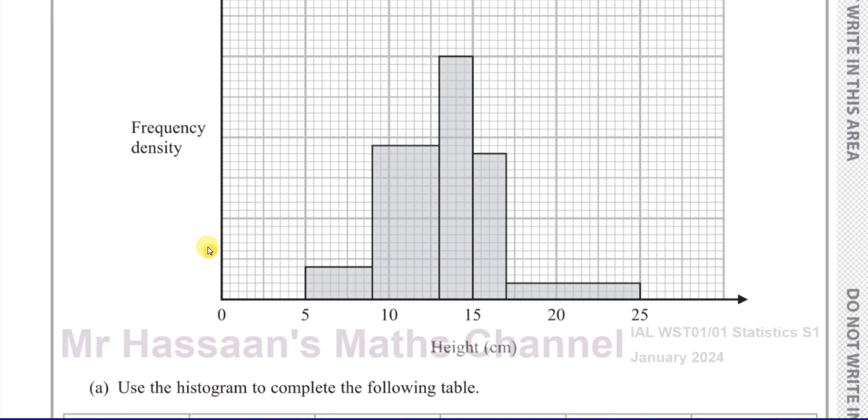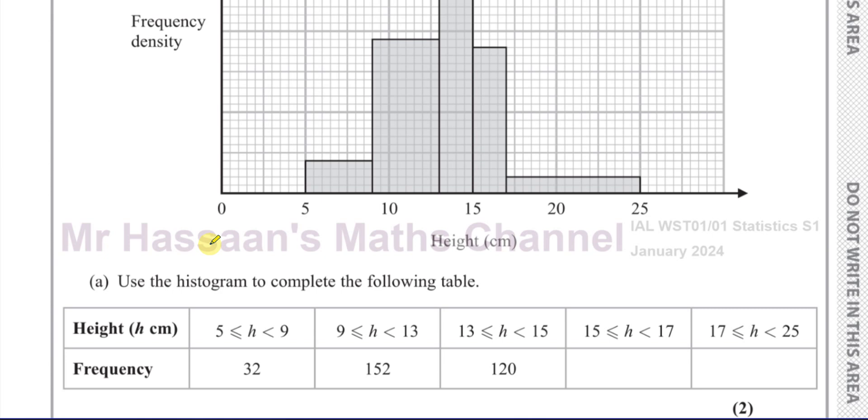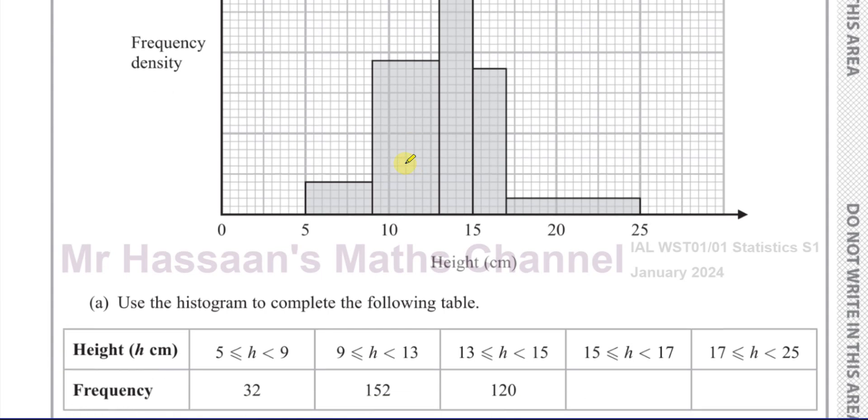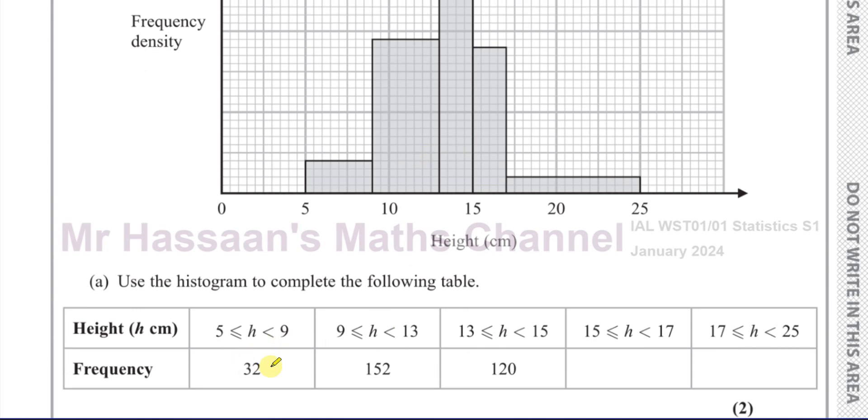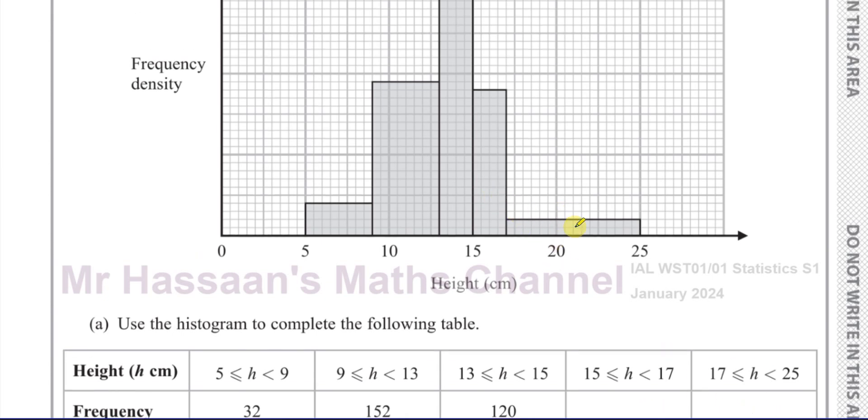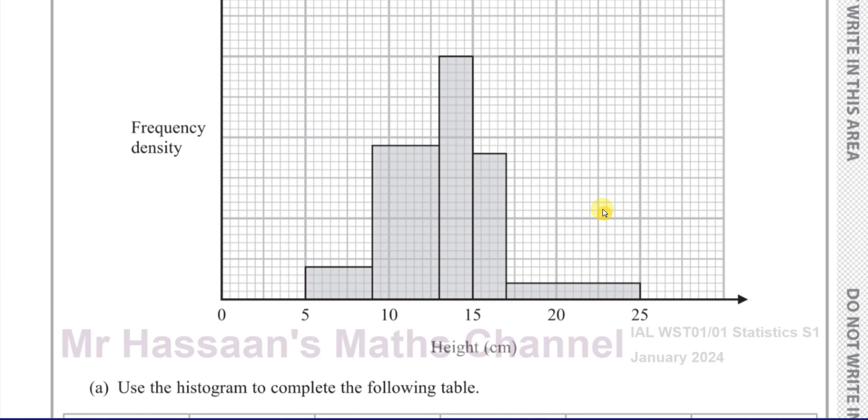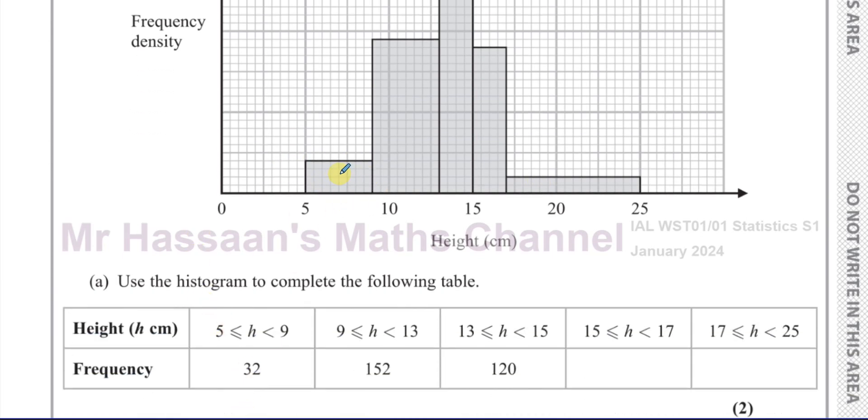So it says use the histogram to complete the following table. We're given a frequency table and a histogram. From the histogram, the first bar, second bar, and third bar values of the frequency table are given, but the frequency table values we have to write in are for the last two bars. There's two ways we can tackle this. I'm going to explain this in two different ways. One way of tackling a question like this is to think of the number of squares in the bar and see the frequency, then work out how many items does each square represent.